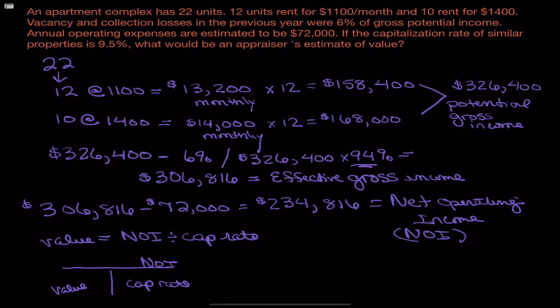So filling that in, our cap rate is 9.5%. Our NOI was $234,816. We have a top and a bottom number. So we're going to divide. So our value for this property, doing the math, is going to be $2,471,747.